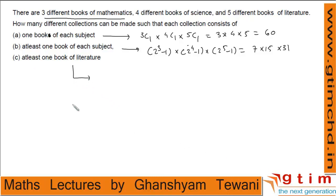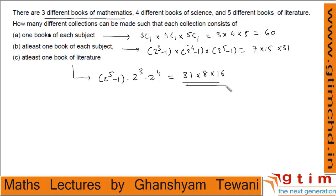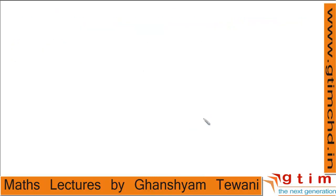For the third part, we have to select at least one literature book. For literature books, the number of options is 2 power 5 minus 1 = 31. There are no conditions for mathematics and science, so for maths the total options are 2 power 3 = 8, and for science 2 power 4 = 16. This gives 31 × 8 × 16, which includes all combinations where at least one literature book is selected and any number (including zero) of maths and science books.